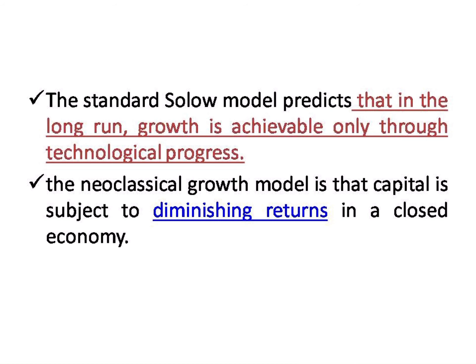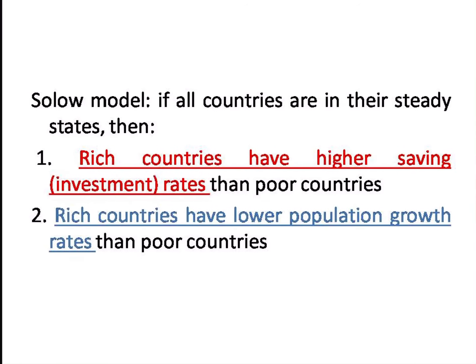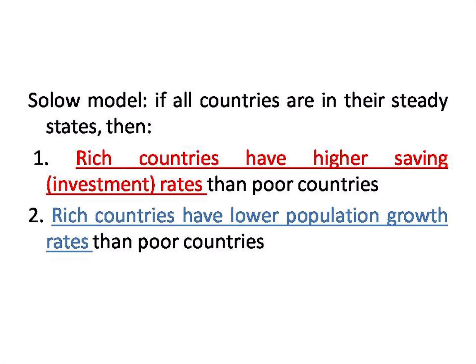The standard model predicts that growth is achievable only through technological progress. In neoclassical growth, capital is subject to diminishing returns in the closed economy. The model also predicts a steady state.